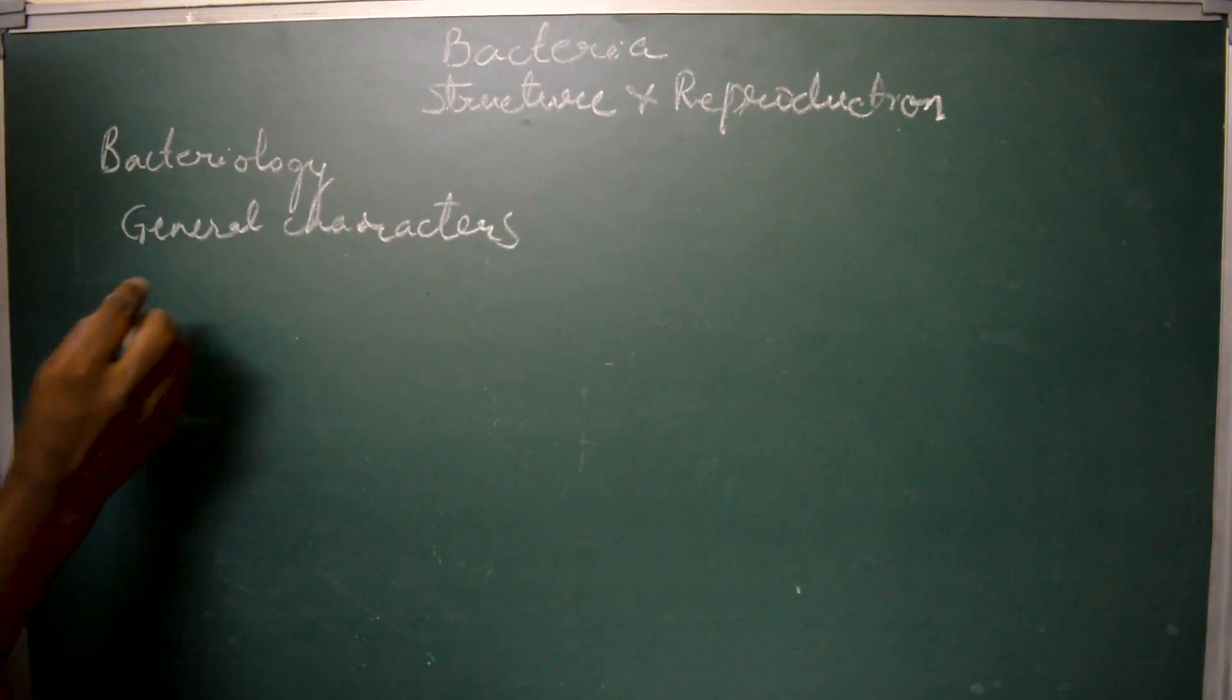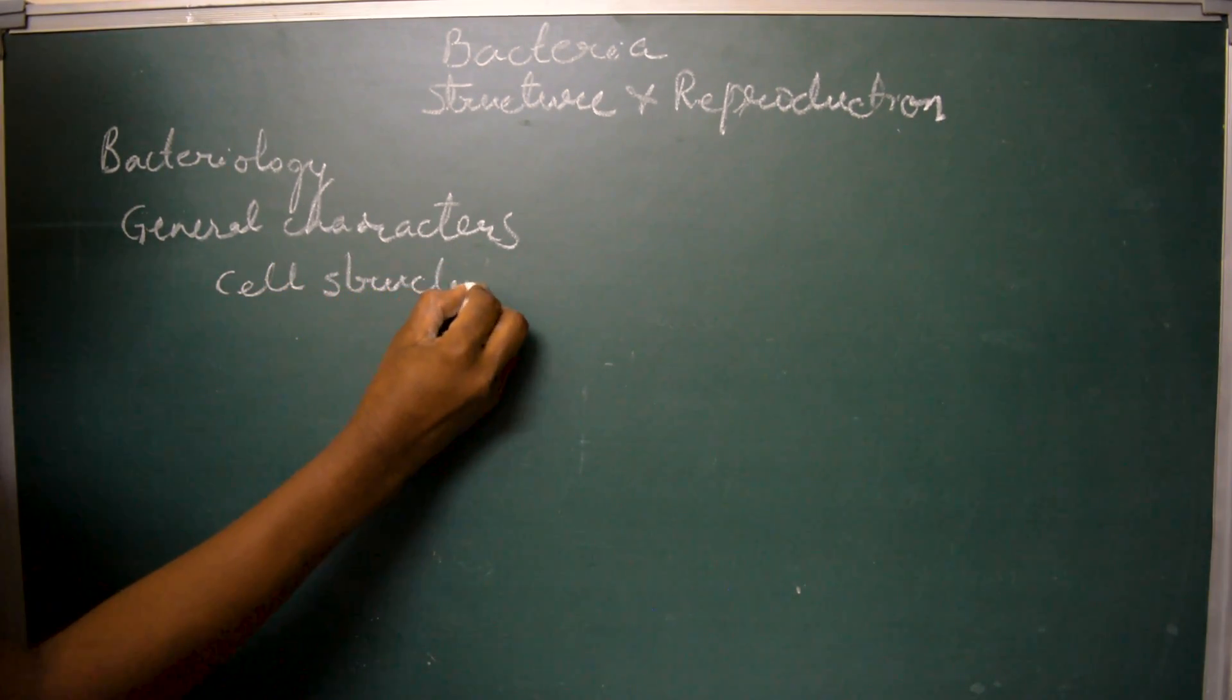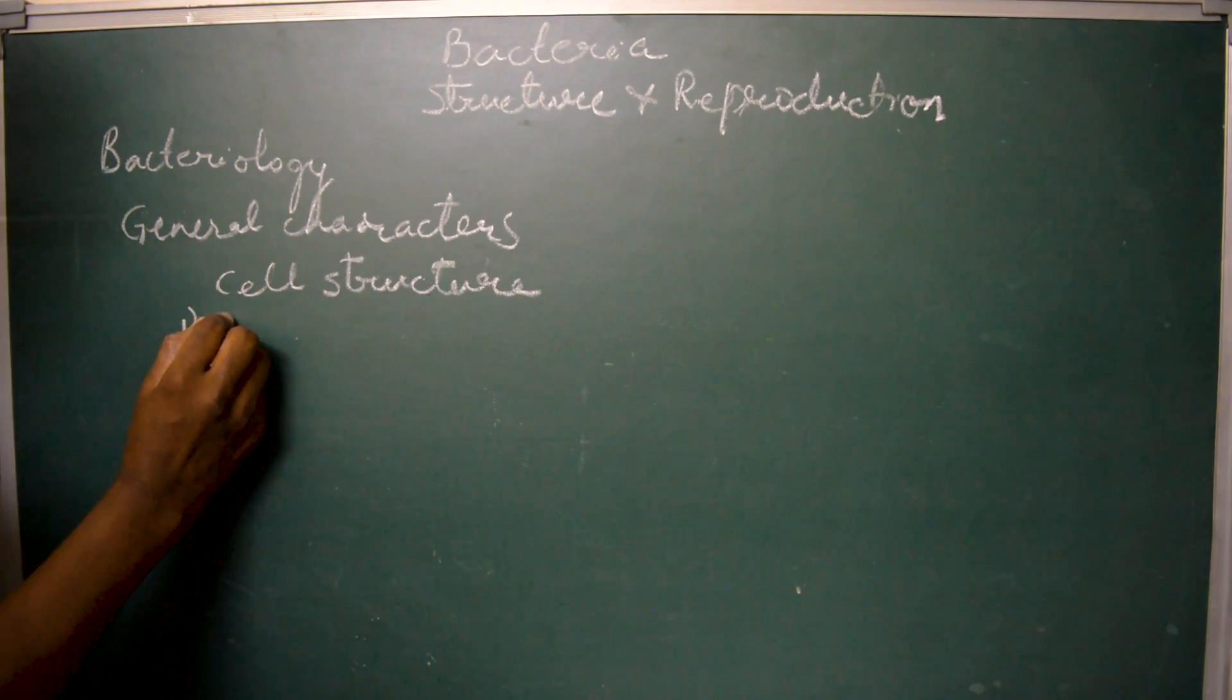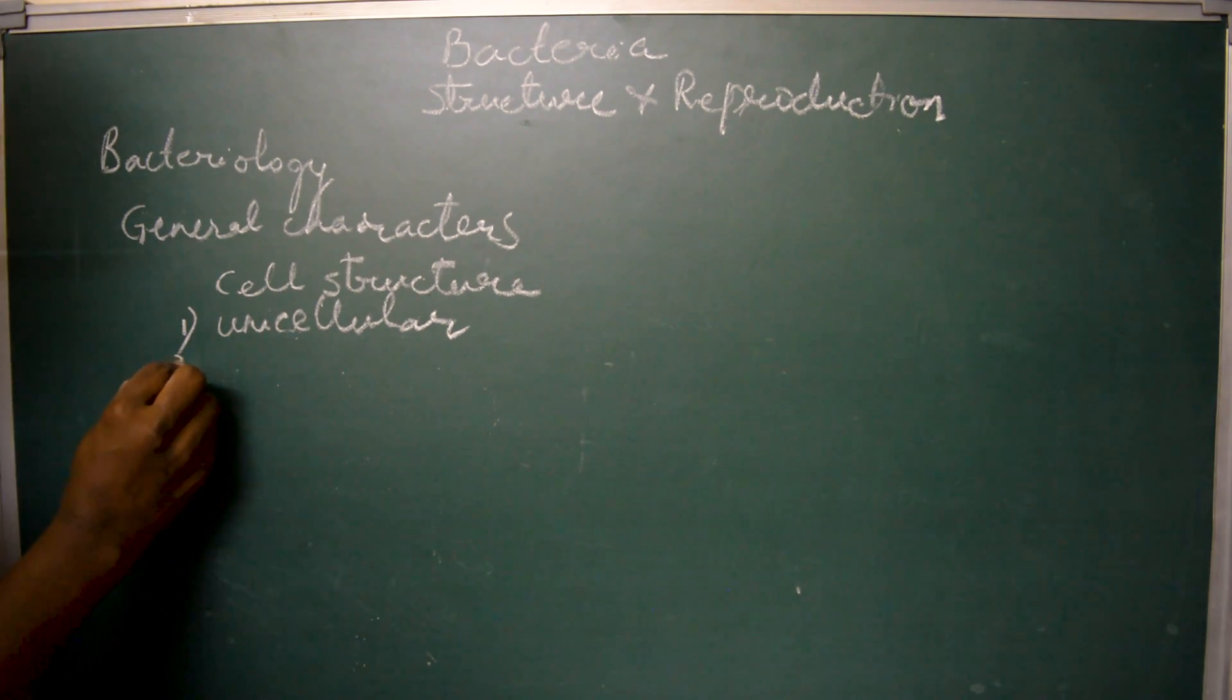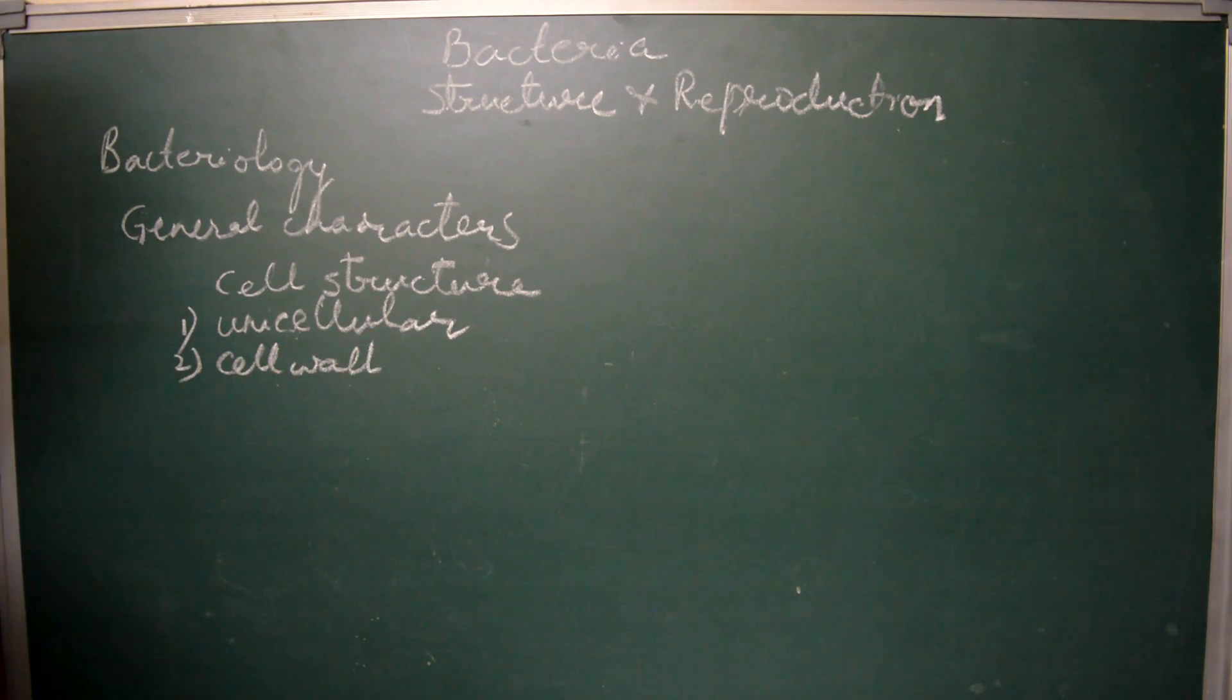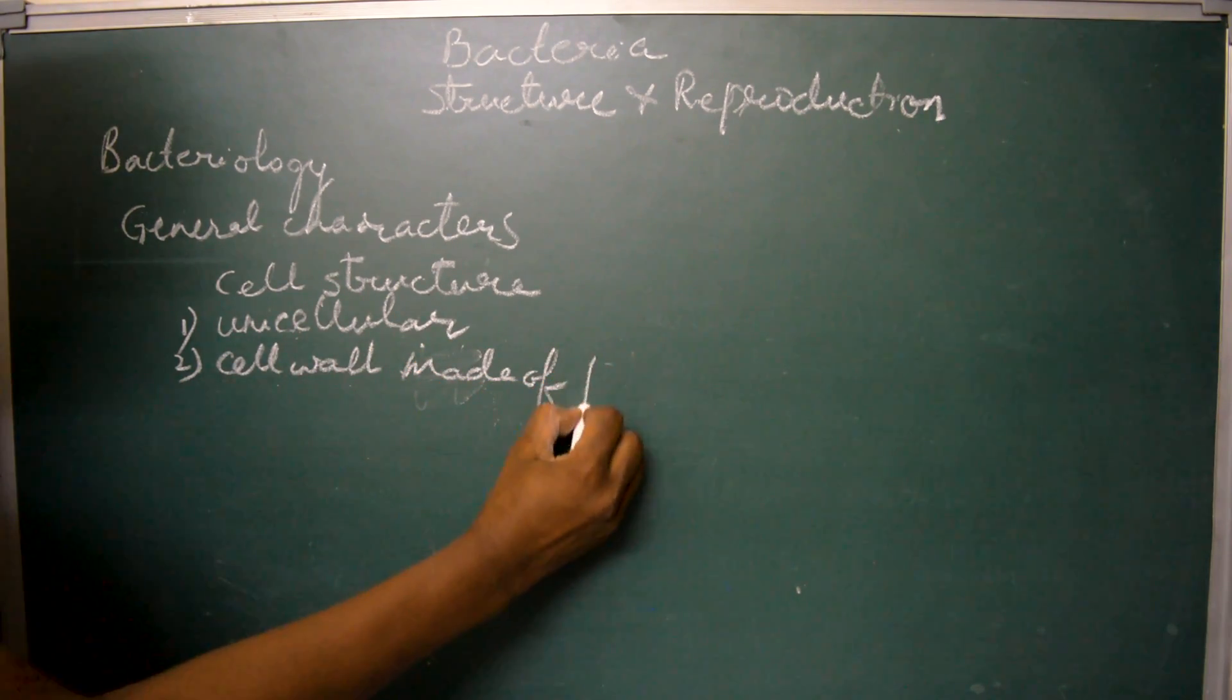Now let us see the cell structure or the general characters of cell. Bacterial cells are unicellular, that is they have a single cell which performs all the functions.